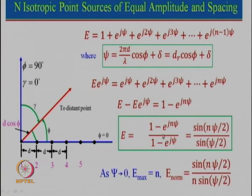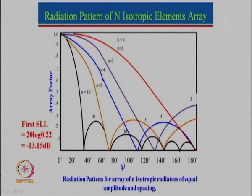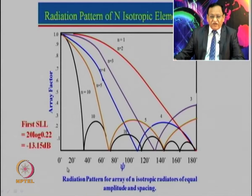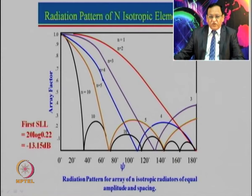The maximum amplitude of the electric field is N. If we normalize this function by dividing by N, the maximum value becomes 1. This entire function can be plotted for different values of N and ψ. Along the x-axis we have ψ varying from 0 to 180 degrees, and along the y-axis we have the normalized array factor. For a single element, the array factor is simply 1.